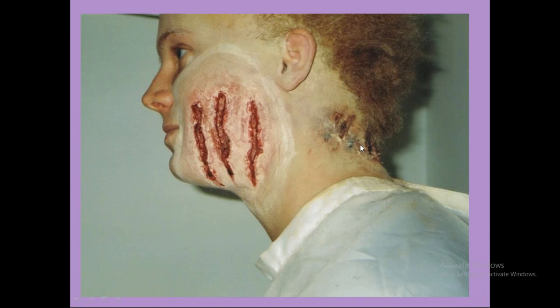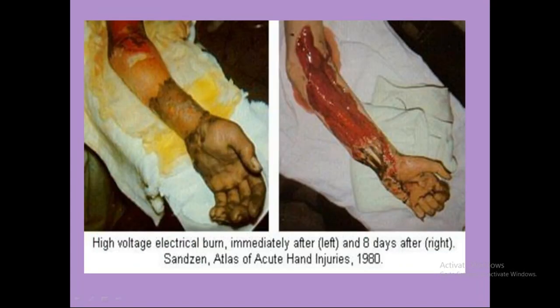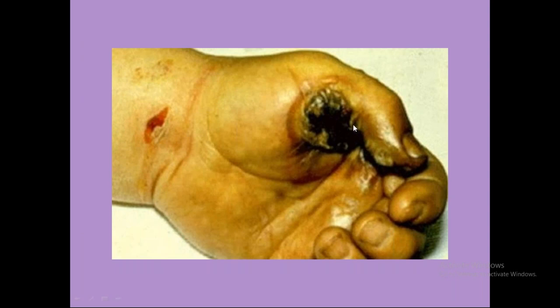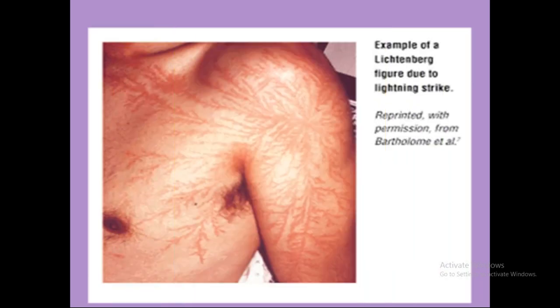These are electrical burns — you can see singeing of the hair. This is a high-voltage electrical burn, shown immediately after injury on the left side and after eight days on the right. This is a lightning burn, which we call filigree burns. Filigree burns from lightning look like a fern or tree pattern — a branching pattern. Whenever lightning strikes, this kind of burn pattern can be seen.